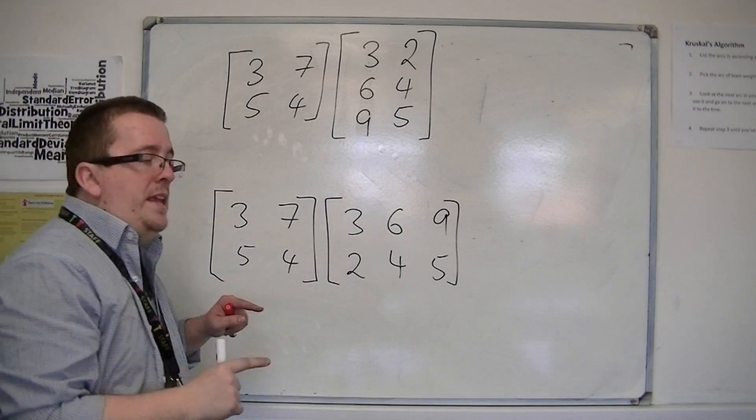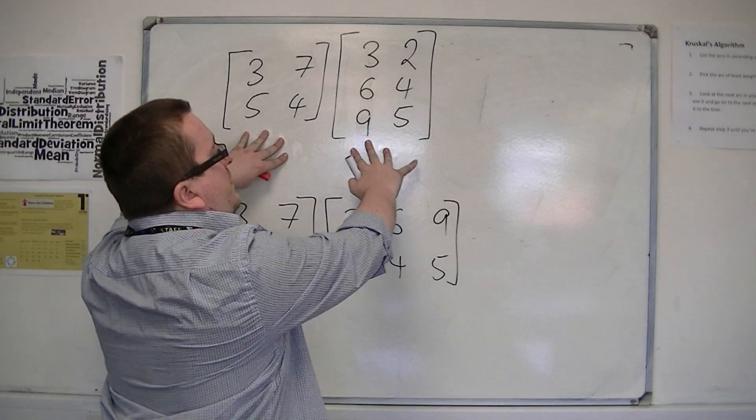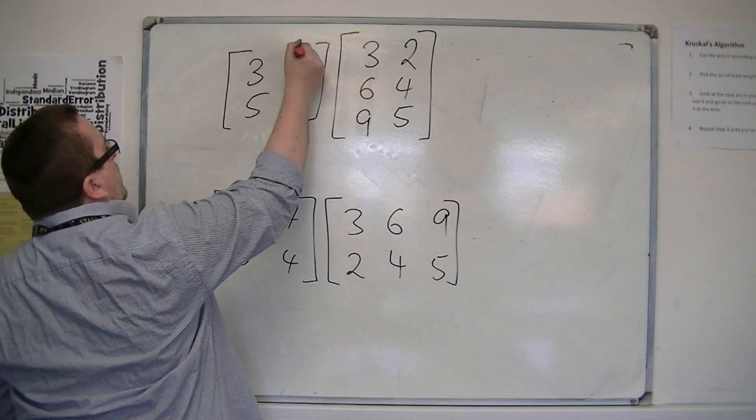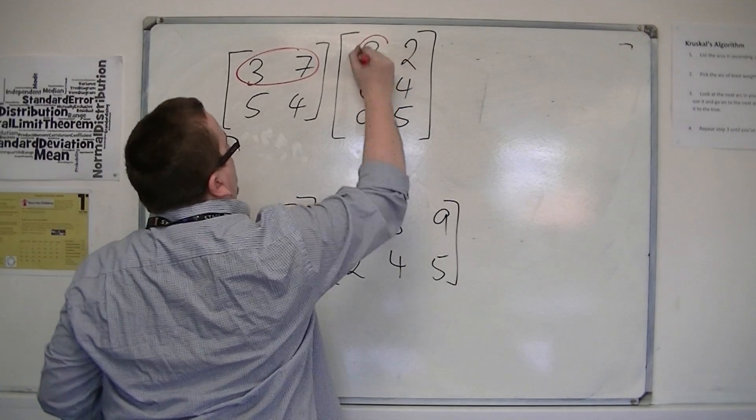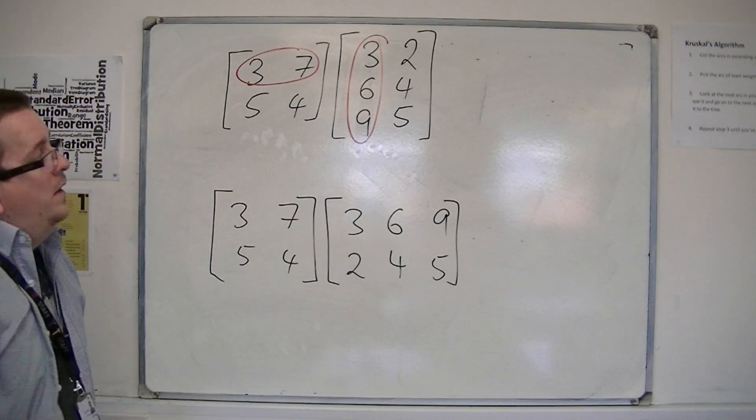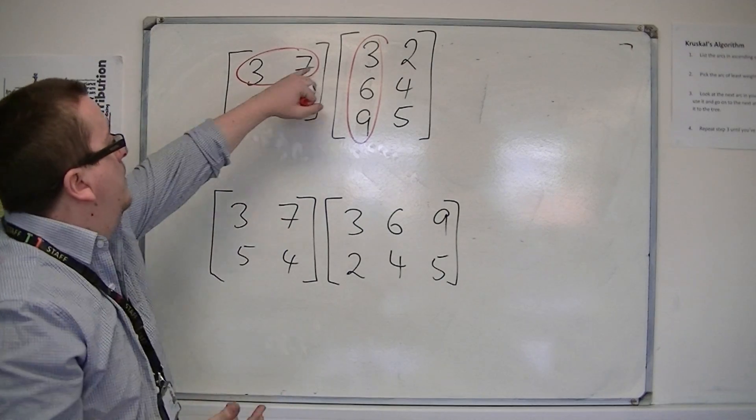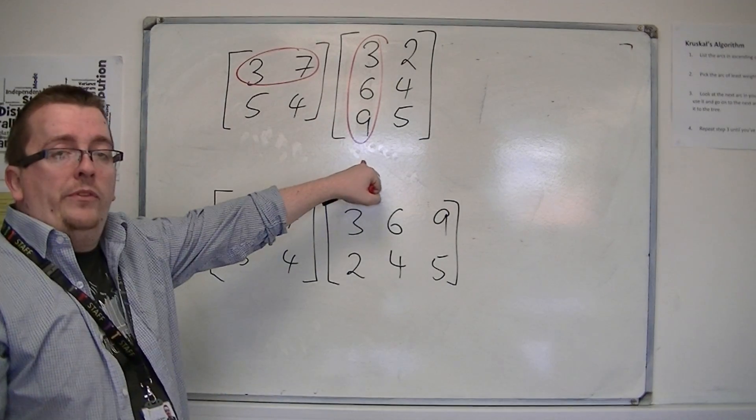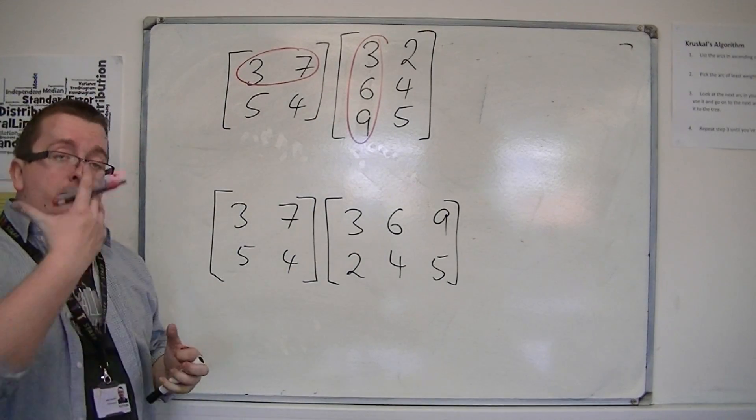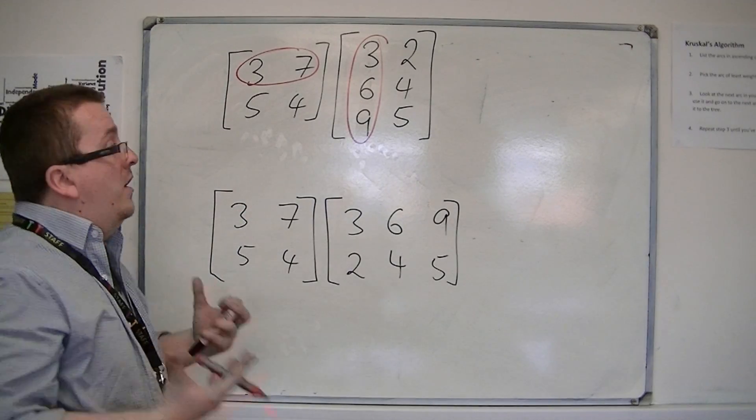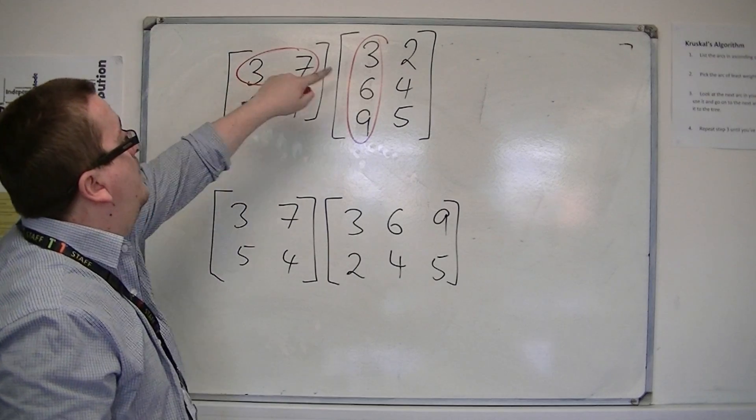Now, these cannot be multiplied together. The reason why is because when I multiply the first row by the first column, I find I have two numbers multiplying with three numbers. So, because that number of elements is not the same, I can't really multiply that by that.